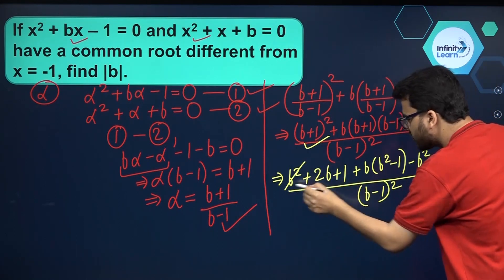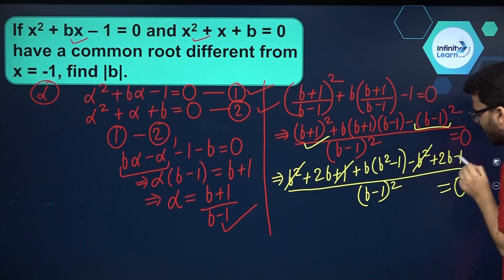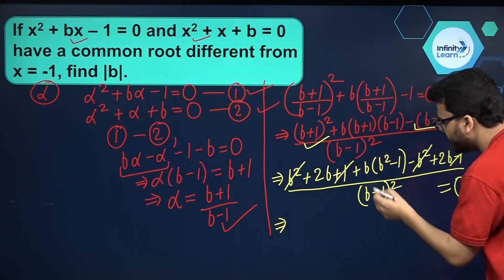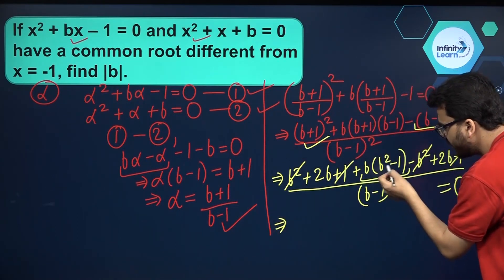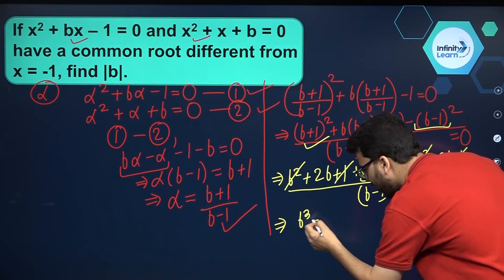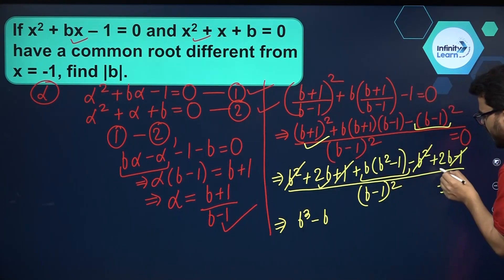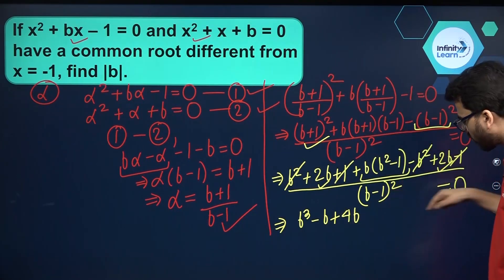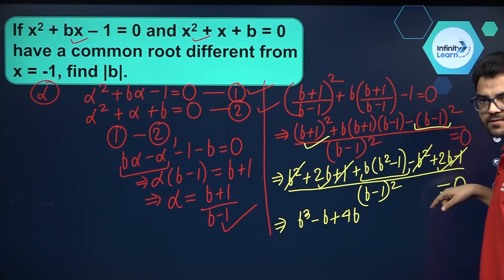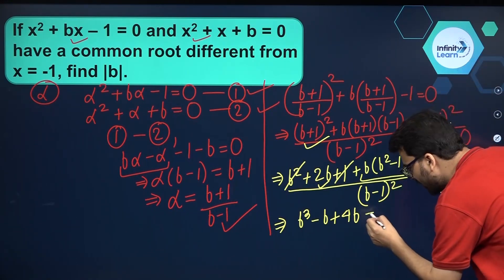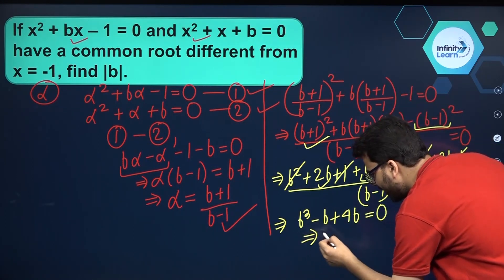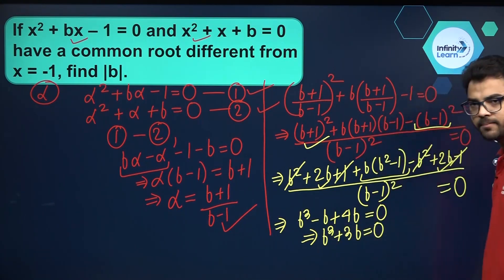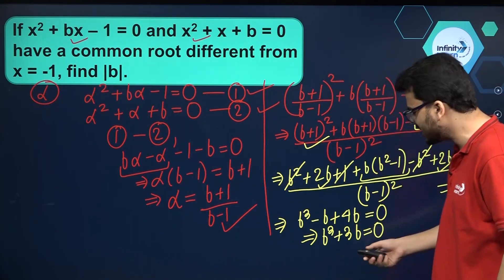b² and b² cancel, and +1 and -1 cancel. Opening the bracket b(b²-1) gives b³ - b, and 2b + 2b gives 4b. Cross-multiplying the denominator gives 0. So we get b³ + 3b = 0.